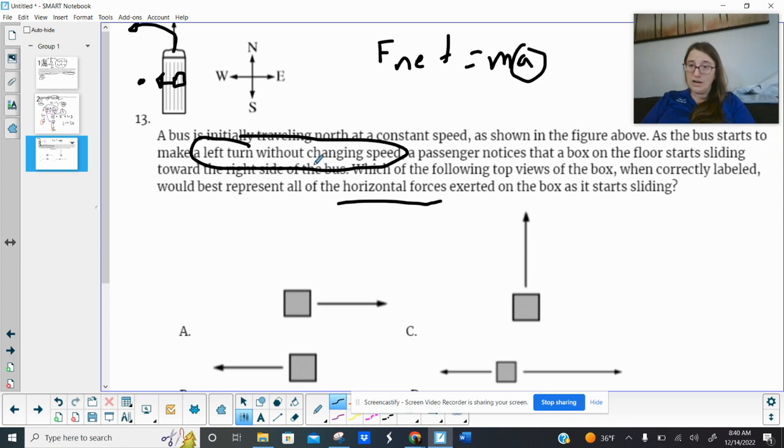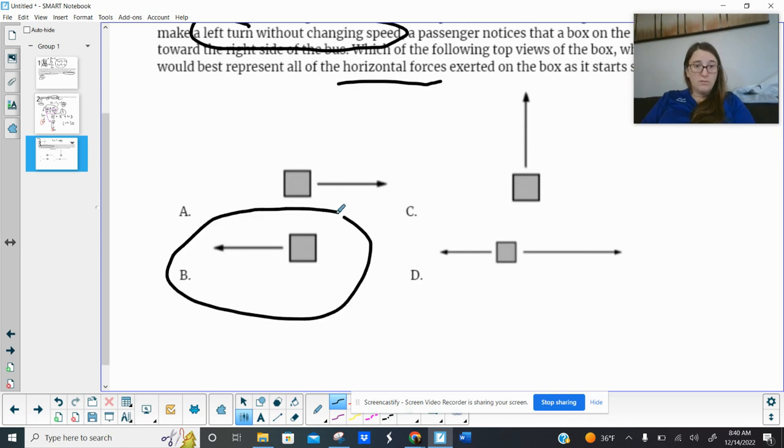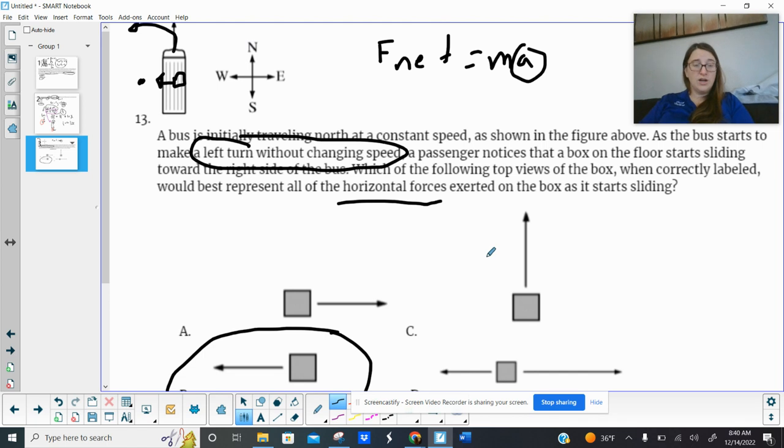there has to be a force that points in towards the center of the rotation. So there's the direction of the force pointing in towards the center. Now, I know it's confusing because it says the box starts to slide to the right side of the bus, but it's actually turning to the left, right? Because it's in the bus, and the bus is turning to the left,